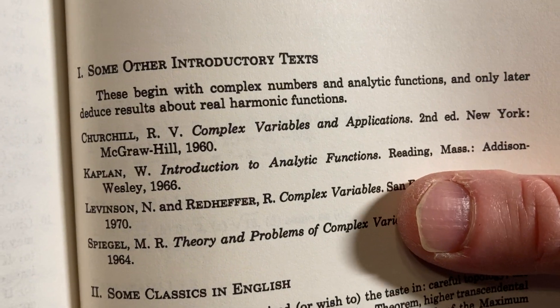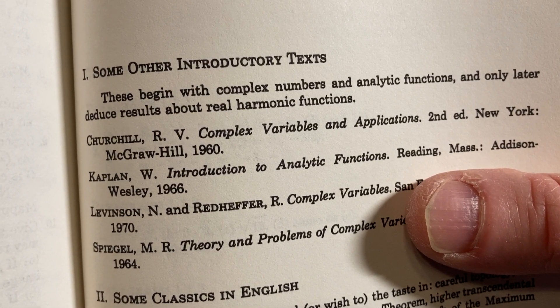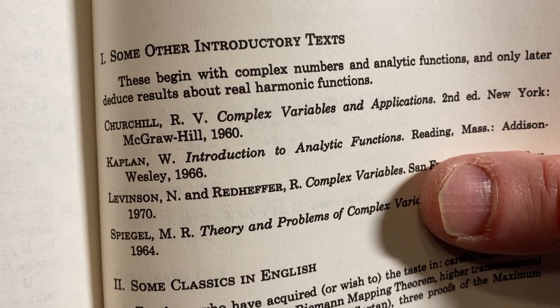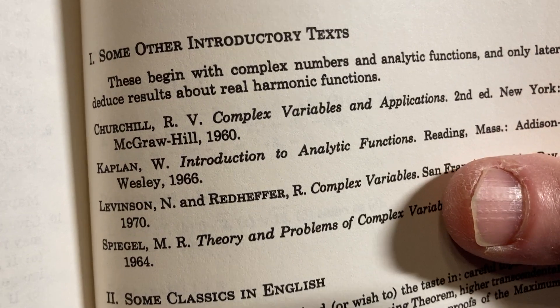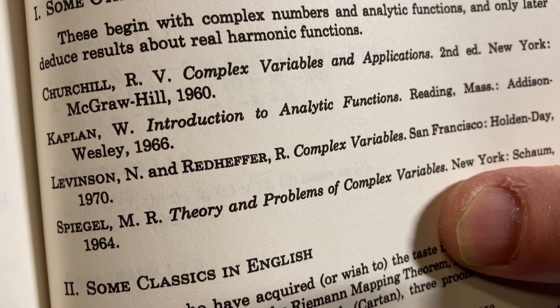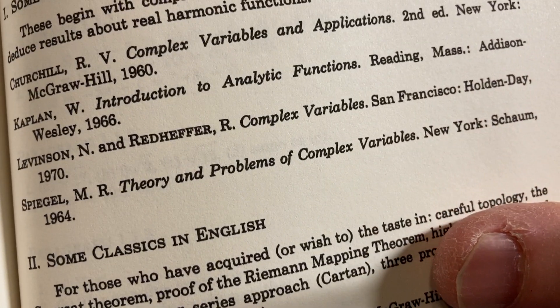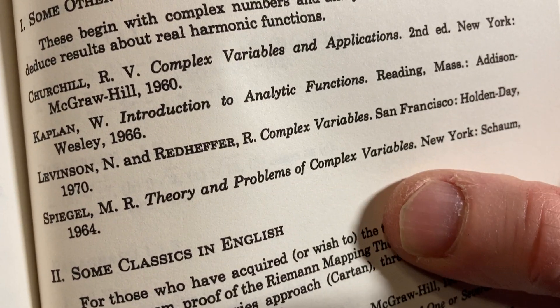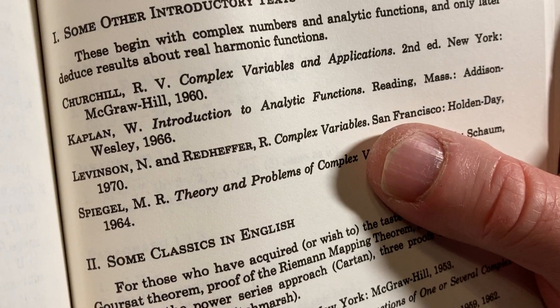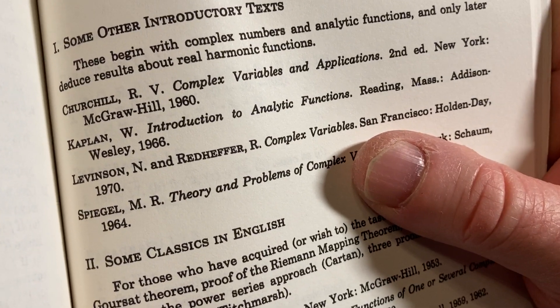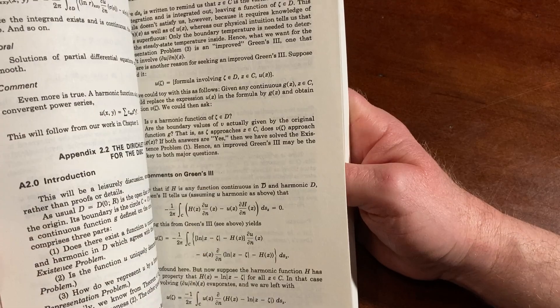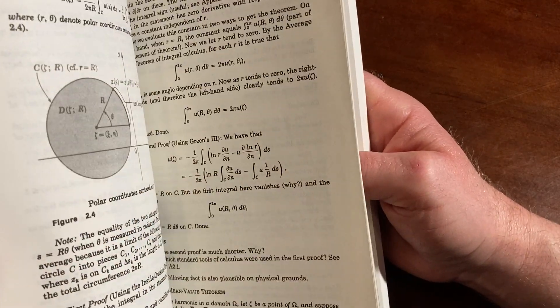Okay, so this is good. So I have this one, Complex Variables and Applications by Churchill. That's the most popular Complex Variables book ever written. It's just really popular. It's a great book. There's other books that are also good. Introduction to Analytic Functions by Kaplan. Complex Variables by Levinson and Redheffer. I have that one. And Theory and Problems of Complex Variables, 1964. That might be the Schaum's. I think it is. I have the Schaum's Complex Variables. The Schaum's Complex Variables is probably the best Schaum's math book out there. If you're going to get a Schaum's Outline, it's a series of books where they go over stuff and they have a lot of examples. The Complex Variables one is excellent.